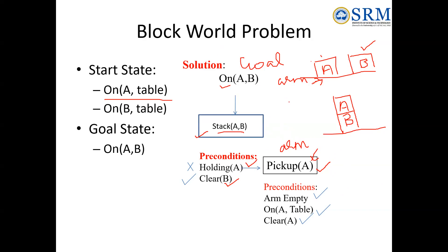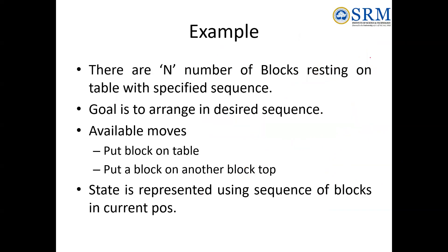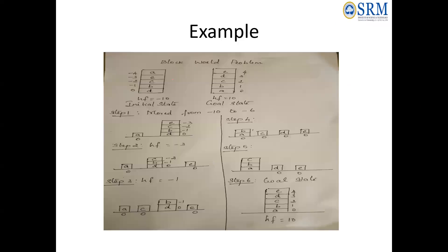Now we'll look at another example using heuristic functions. There are n blocks that must be arranged in a desired sequence using available moves. In the initial state, the blocks are A, E, C, D, B stacked, with heuristic values 0, -1, -2, -3, -4, giving a total heuristic function (HF) of -10.